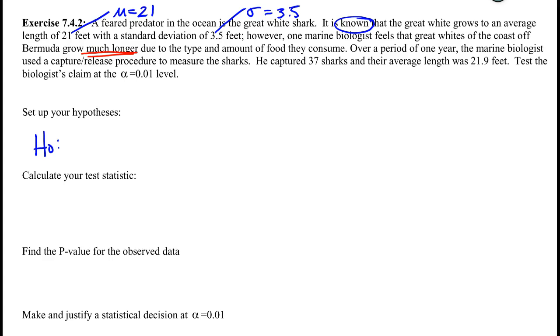Here we already see a keyword with some direction to it, which is very important for my hypotheses. Over a period of time he uses a capture and release procedure to measure the sharks. He captures 37 sharks and their average length is 21.9 feet. So this average is in the same sentence as my sample size, so that's my x-bar. That's my evidence. It is not going to show up in my hypotheses. So my hypotheses are: the mean for the sharks off the coast of Bermuda is the same as the mean for all great white sharks, that they are not larger or longer. My alternative is that they grow much longer.